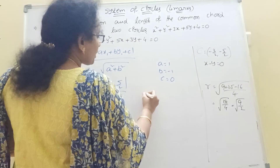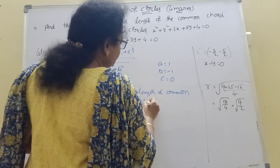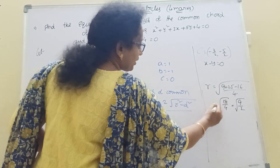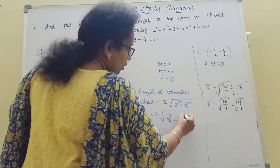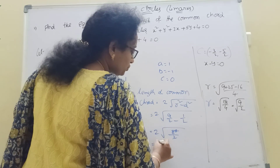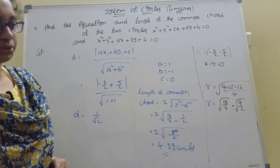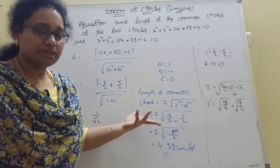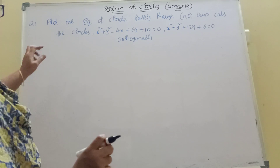D is the perpendicular distance d = 1/root 2. Now using the length of common chord formula: 2 into root of r² minus d². r² = 9/2, d² = 1/2. So r² minus d² = 9/2 minus 1/2 = 8/2 = 4. Root of 4 = 2. Length = 2 into 2 = 4 square units.